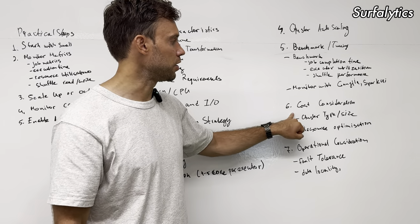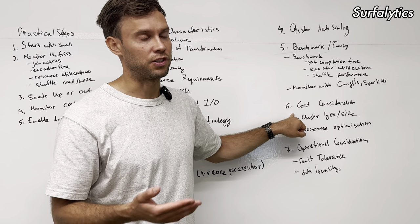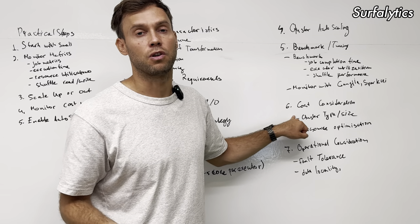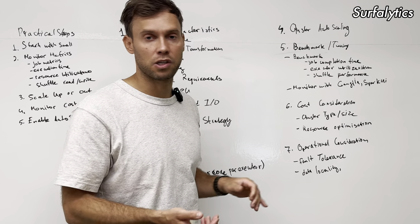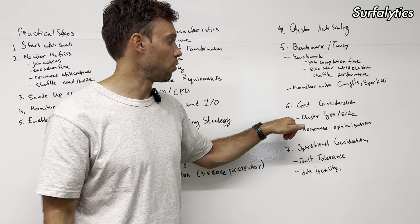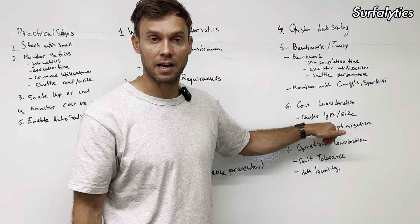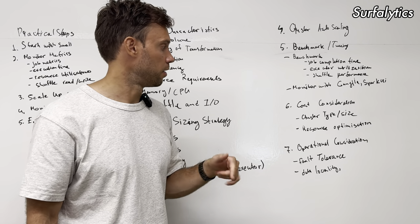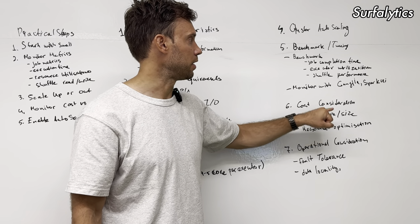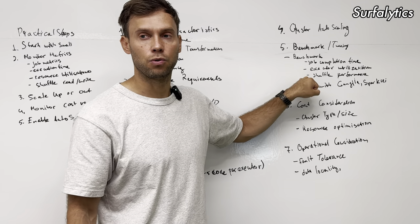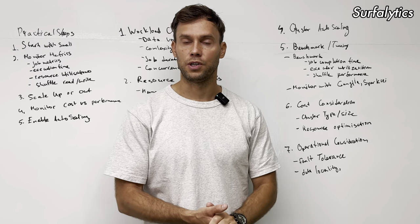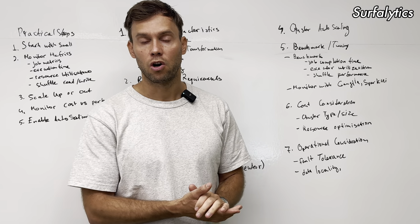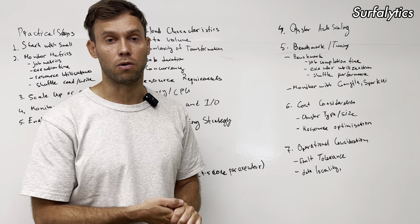Cost consideration is important because in cloud computing, it's very easy to spend $1,000, $10,000, or $100,000 on simple compute — especially if it's not optimized. It depends on the cluster type and size. That's why you always need to think about cost. Resource optimization means evaluating whether your resource provisioning is a good strategy, or whether things are underutilized or overused, and finding ways to decrease cost.